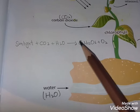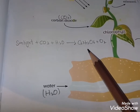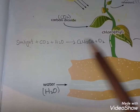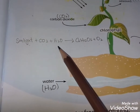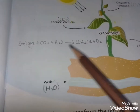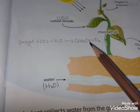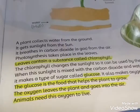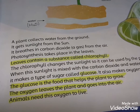C6H12O6 is the chemical formula of glucose and O2 is the chemical formula of oxygen. So: sunlight plus carbon dioxide plus water mix to form C6H12O6 (glucose) plus oxygen. The glucose is the food that helps a plant to grow.